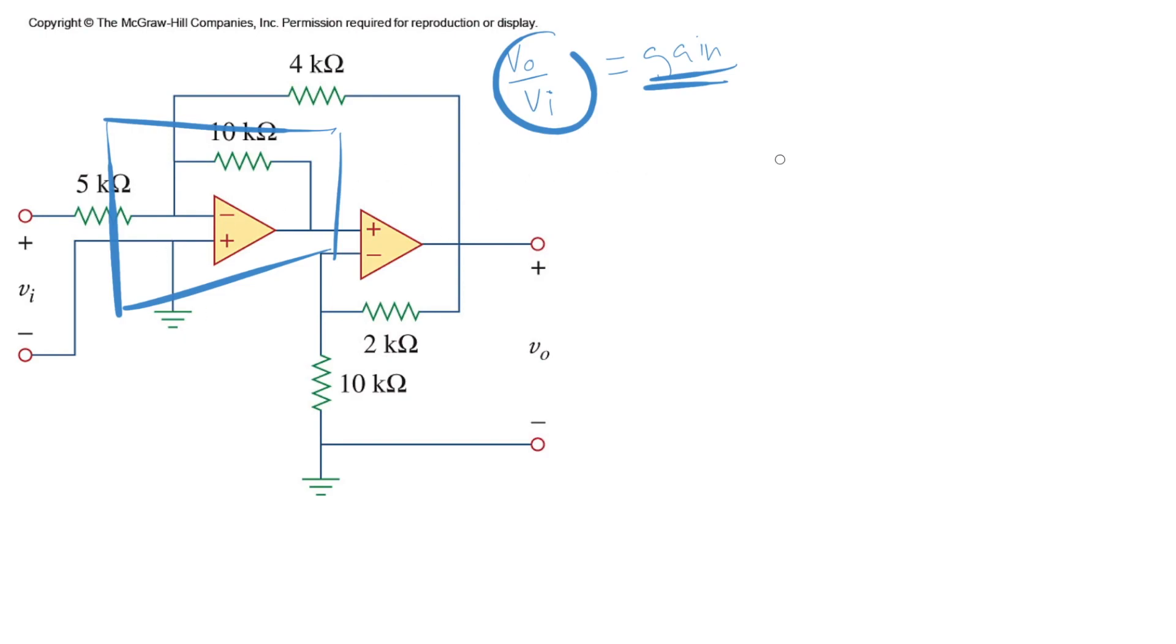Looking at the first one, if you redraw it by itself, it is like this: 5k and then this is ground, and then we have the feedback resistor RF which is 10k, and then we have this 4k resistor. It's connected to our inverting input, right?